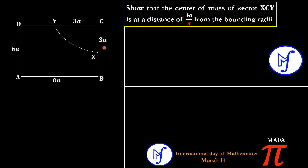The first thing to do is define our coordinate axes. I'm going to place the origin at the center C, calling the vertical axis y and the horizontal axis x. With this origin, values to the right are positive, upward is positive, to the left is negative, and downward is negative. So the point X has a y-coordinate of negative 3a, and the point Y has an x-coordinate of negative 3a — giving coordinates (negative 3a, 0) and (0, negative 3a) respectively.